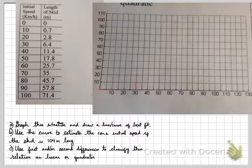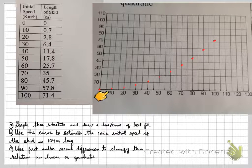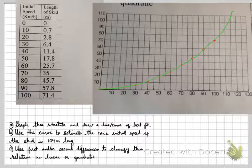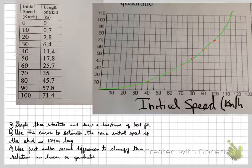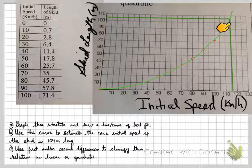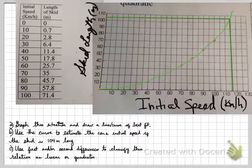For part A, here is the graph of each of the points. You need to represent that with a curve of best fit — extend the curve to answer the next question. For part B, use the curve to estimate the car's initial speed if the skid is 104 meters long. Draw a line across at 104 on the distance axis, hit the graph, then look down. That speed turns out to be approximately 115 kilometers per hour, giving a stopping distance of 104 meters.